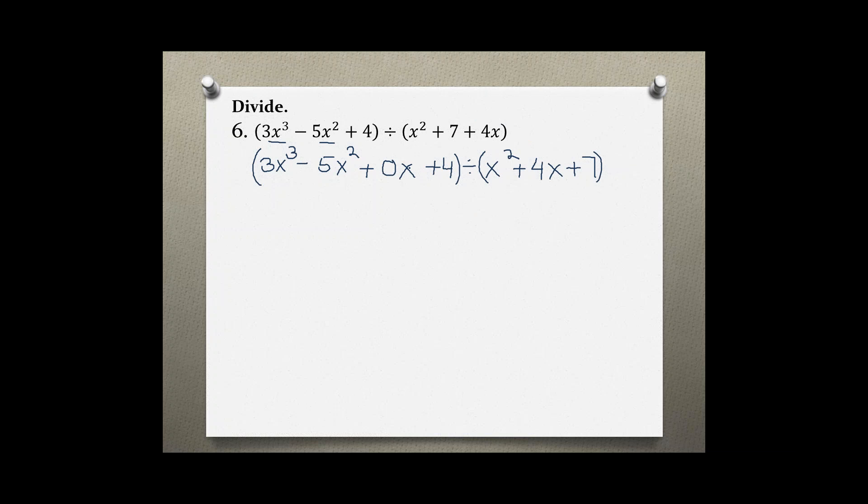They do not need to have the exact same amount of terms, but they do need to have the missing terms filled in. So, now that we fixed our polynomials, we can rewrite our division problem, starting with the divisor: x squared plus 4x plus 7, and then under the division bar, the dividend: 3x cubed minus 5x squared plus 0x plus 4.